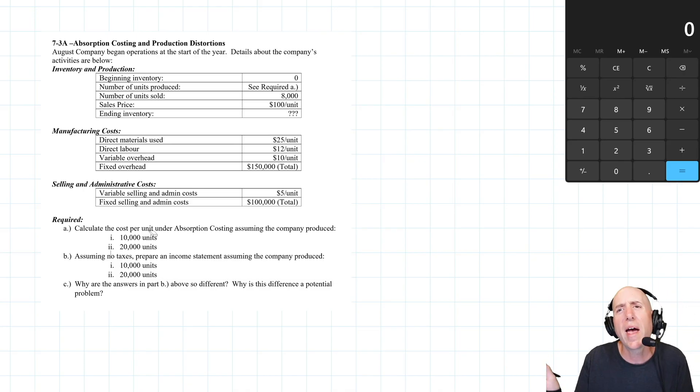And what if they overproduced way over and made 20,000 units when really they were only going to sell 8,000? What we're going to find is, weirdly, net income profit is higher when the company overproduces. So that's this weird thing about absorption costing that this problem illustrates, and I think it illustrates it well.